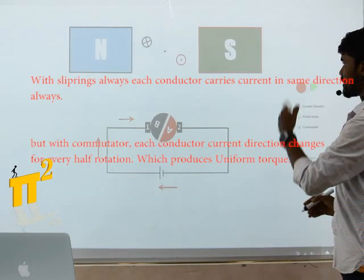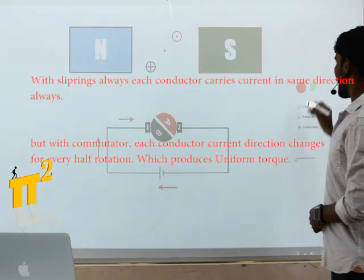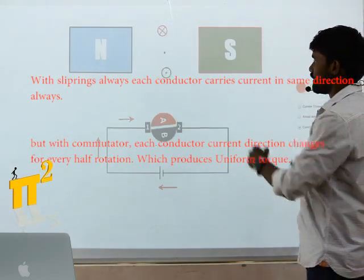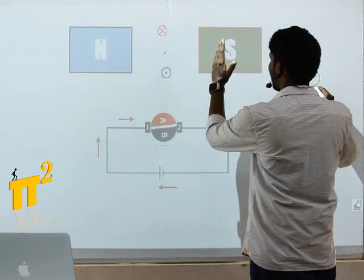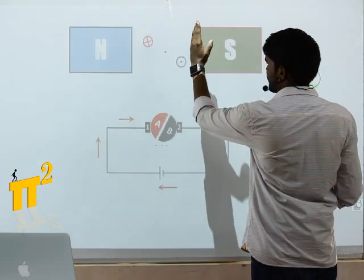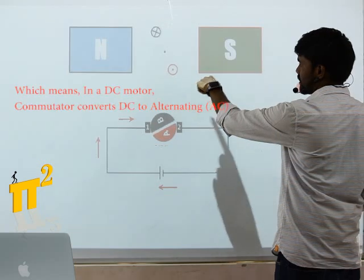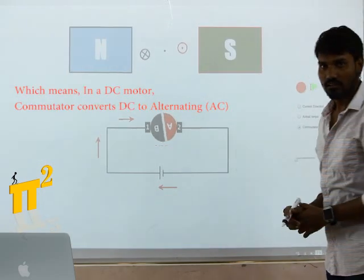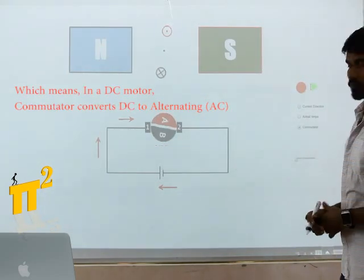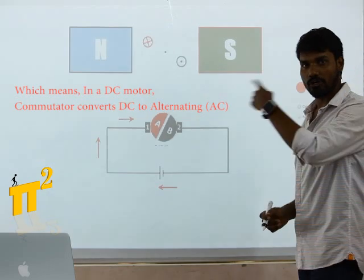So the current direction has changed. Again, if you notice, the instant it crosses this middle part, cross is changed to dot, dot is changed to cross. Likewise, this will help you to produce uniform torque.